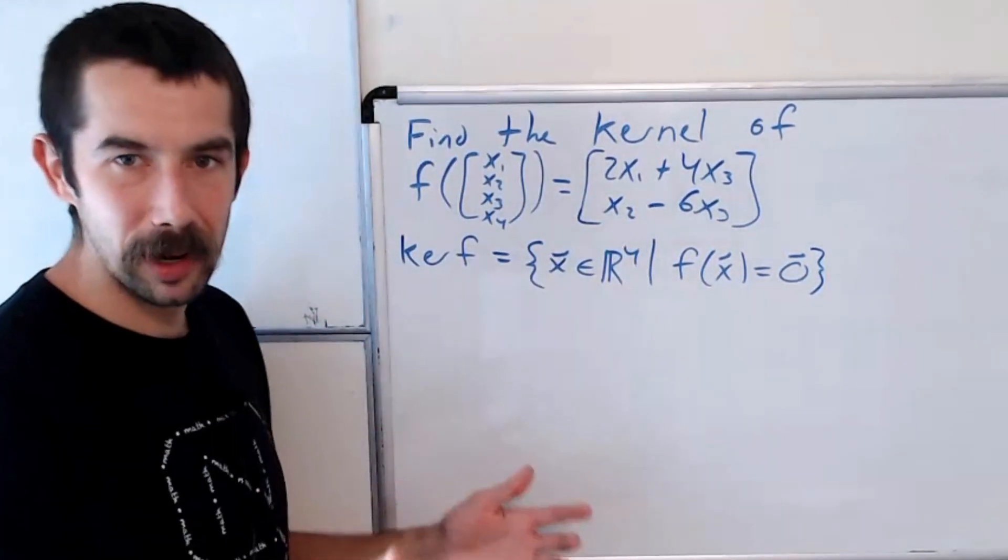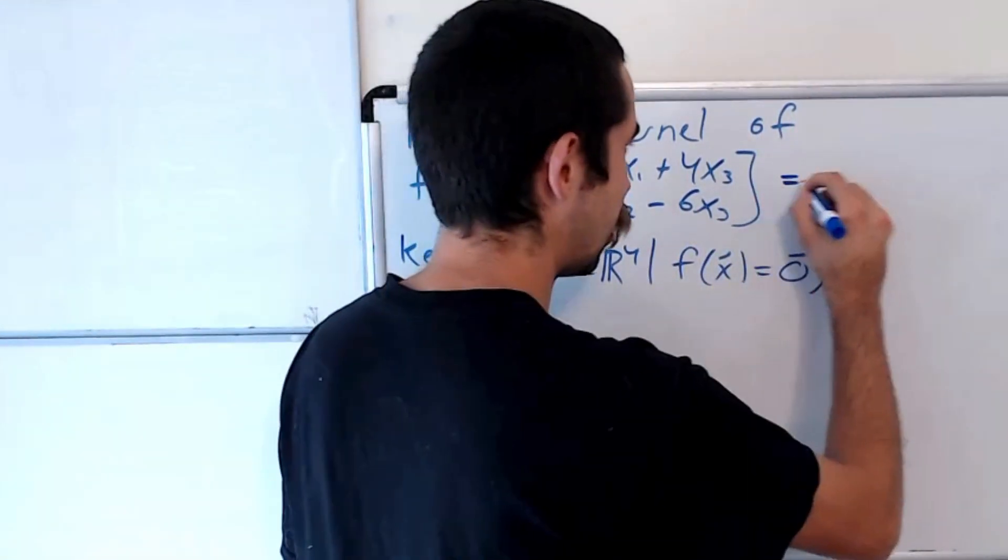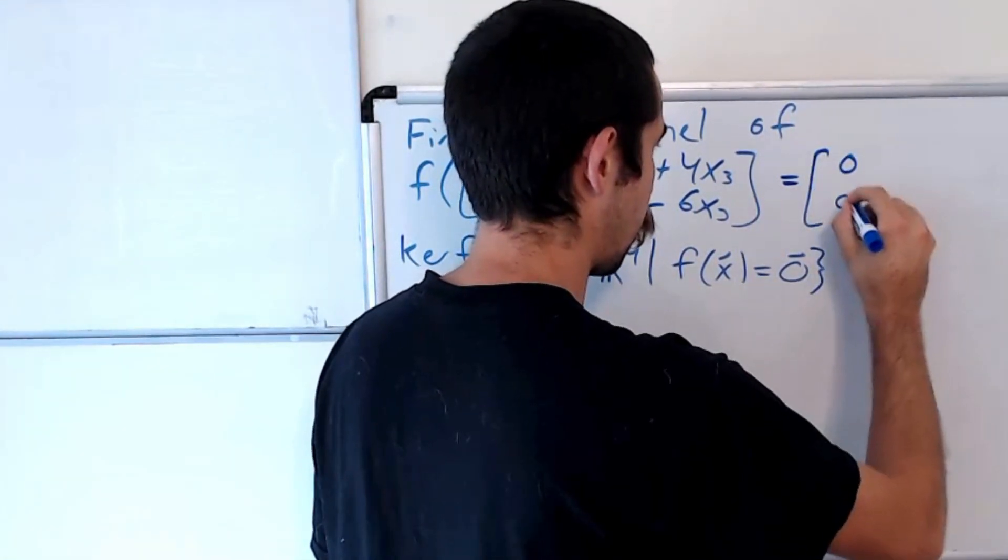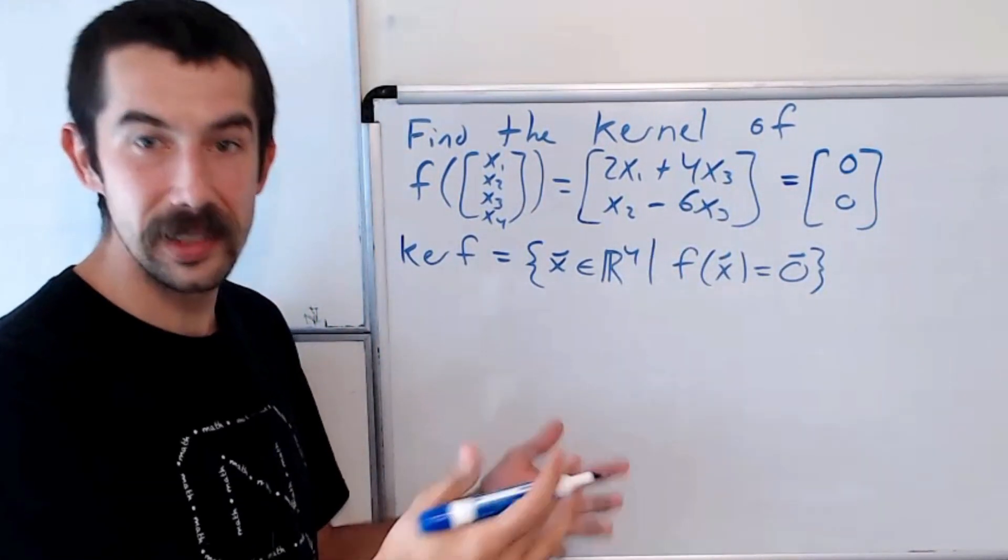So basically, how we're going to solve this is we're going to set this image equal to the zero vector, and then write out the corresponding system of equations and solve that system.